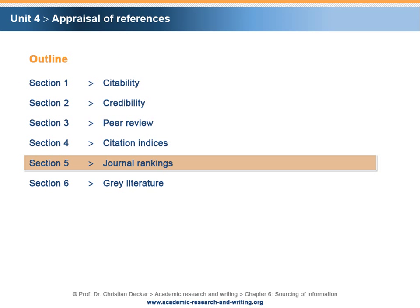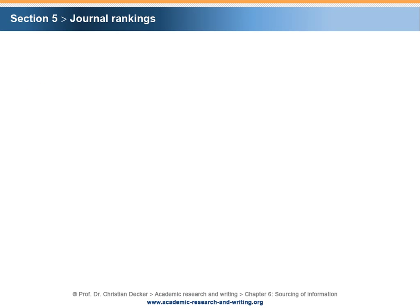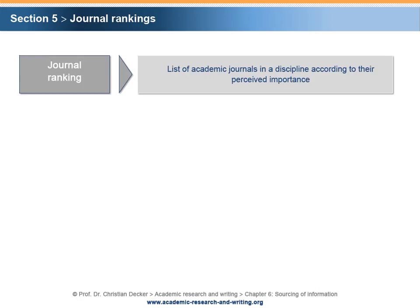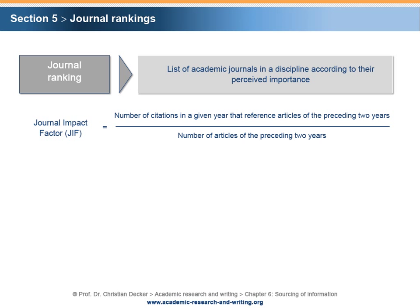Section 5: Journal Rankings. An option for appraising the quality of a journal article is the use of journal rankings. A journal ranking is a table that lists academic journals according to their perceived importance. A well-known example of a journal ranking is the Journal Impact Factor, also referred to as JIF. In its basic form, it is defined as the number of citations in a given year that reference articles of the preceding two years, divided by the number of articles of the preceding two years. The JIF can only be calculated for closed calendar years.